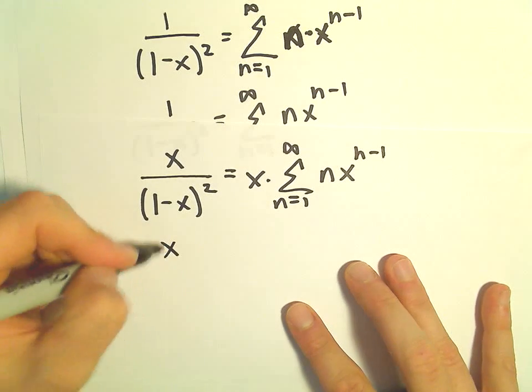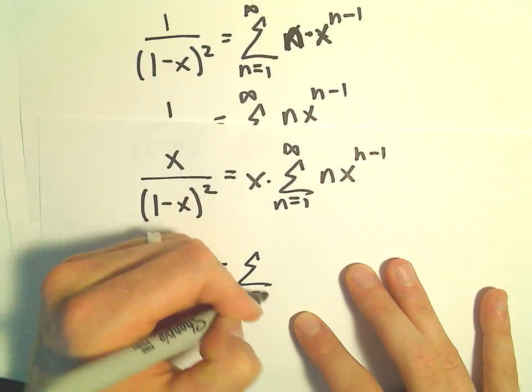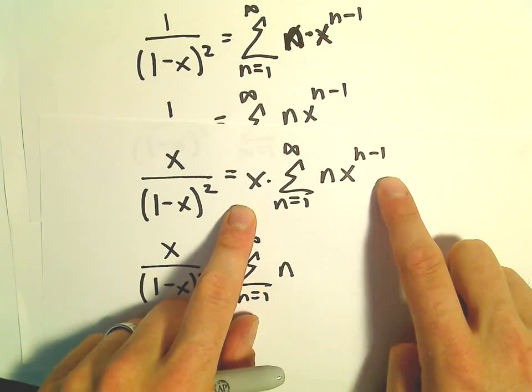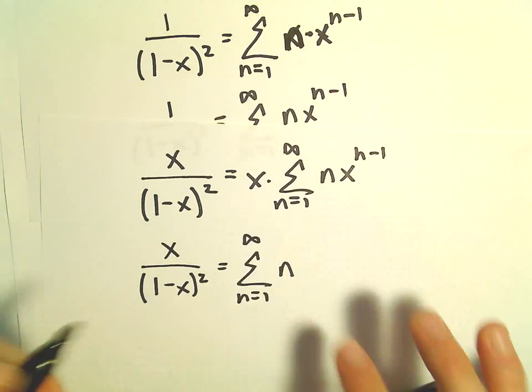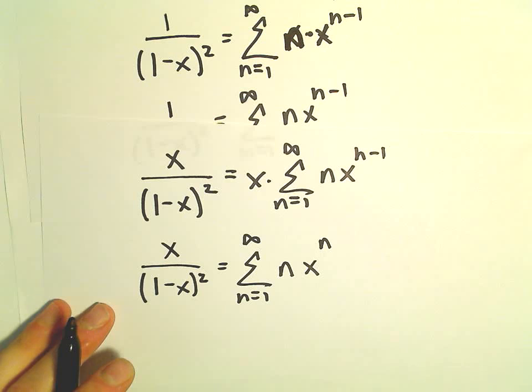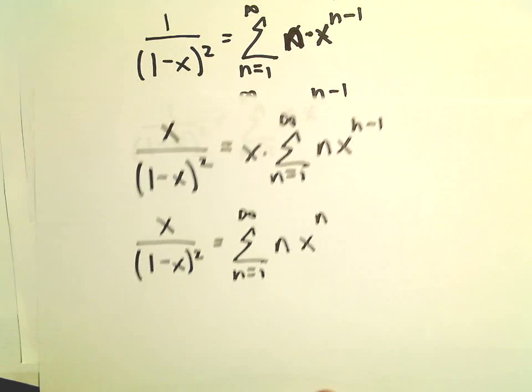Okay, so on the left we'll have x over 1 minus x squared. On the right side we'll have the series from 1 to infinity of n. And again, we can move the x inside. So since we're multiplying like bases, we'll be left with x raised to the n power. Maybe it's starting to seem a little bit closer.